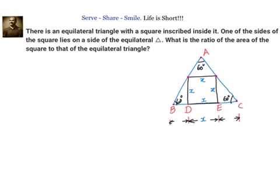What will be BD? We know that tan 60 is equal to root 3, so BD will be x divided by root 3. We also have x by root 3 on the other side.